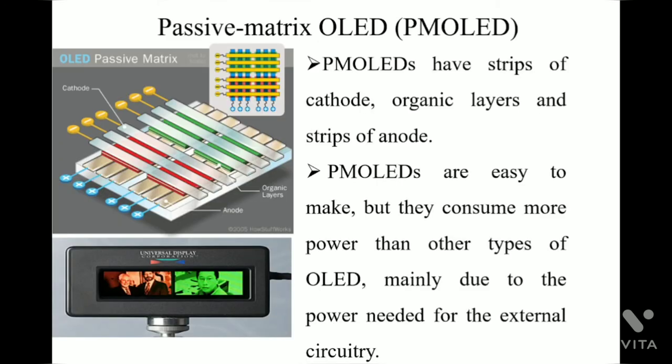Passive matrix OLEDs, or PMOLEDs, have strips of cathode, organic layers, and strips of anodes. PMOLEDs are easy to make but they consume more power than other types of OLED, mainly due to the power needed for the external circuitry.